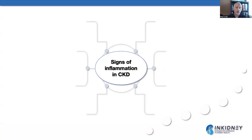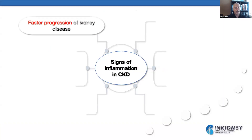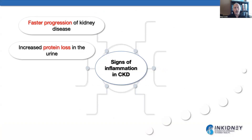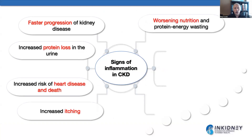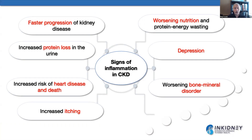These are the causes of inflammation in chronic kidney disease. The signs of inflammation include faster progression of CKD, increased protein loss in the urine, increased risk of heart disease and death, increased itching, worsening nutrition and protein energy wasting, depression, worsening bone marrow disorder, and worsening anemia.